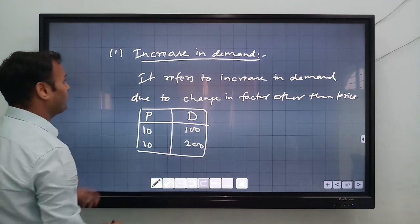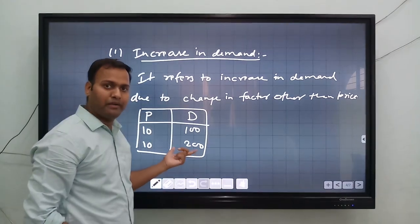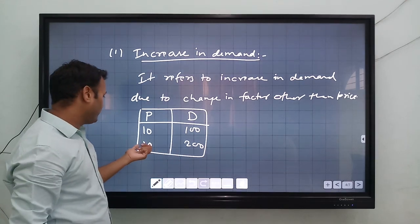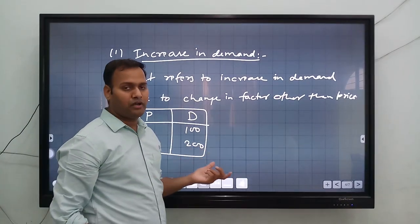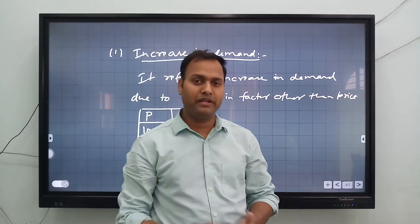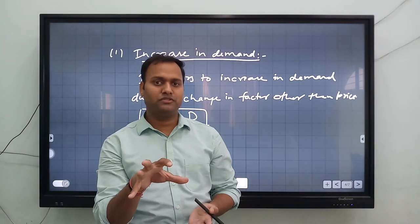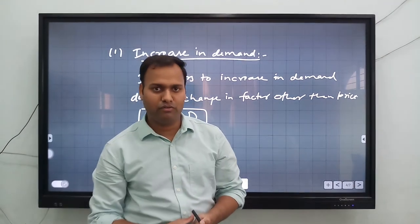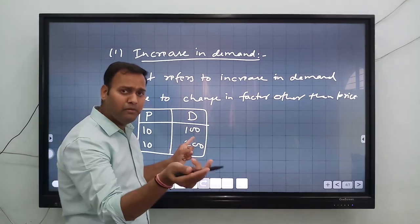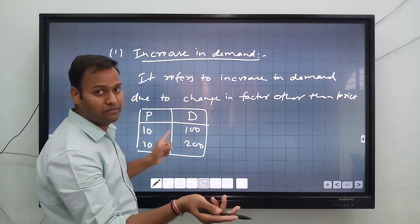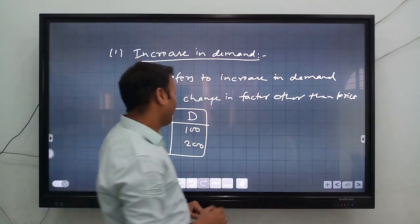You can see that demand increases from 100 to 200, but the price of the particular commodity is fixed. How is this possible? Because maybe the income of the consumer will increase. If the income of the consumer increases, they can purchase more of particular goods and services. So when income increases, people will buy more of a particular commodity even if the price is fixed.